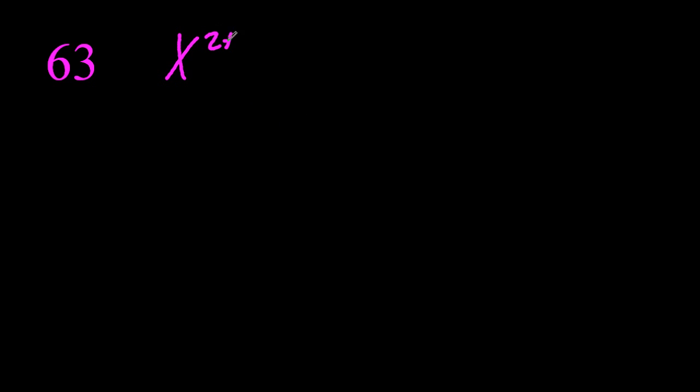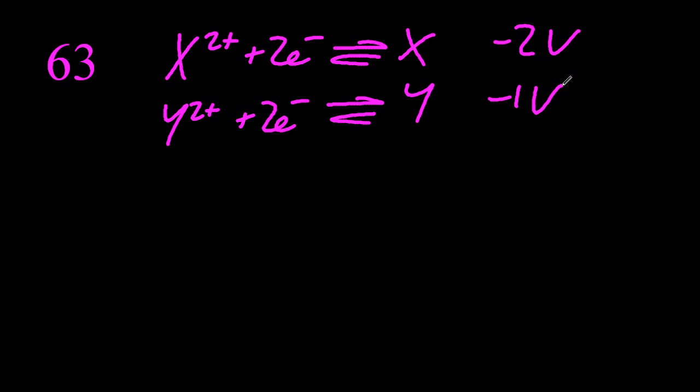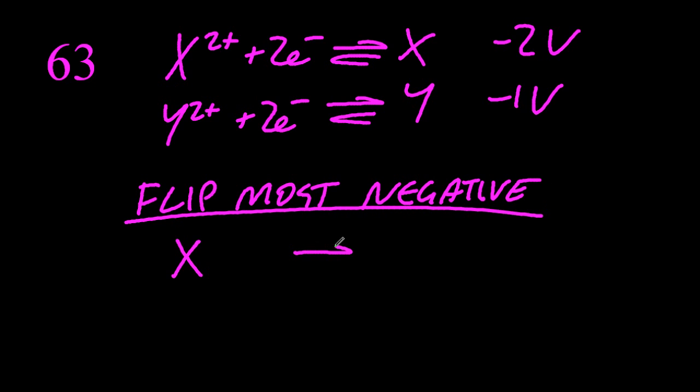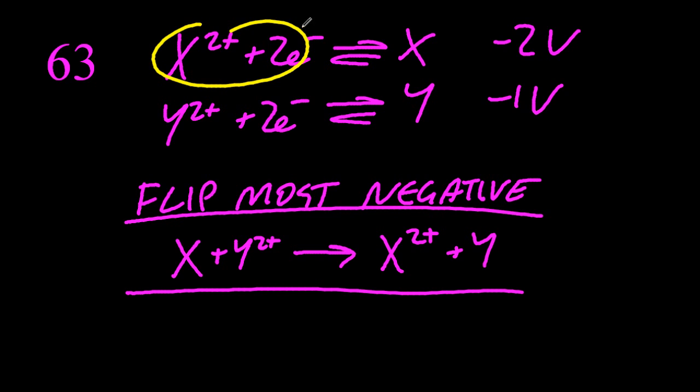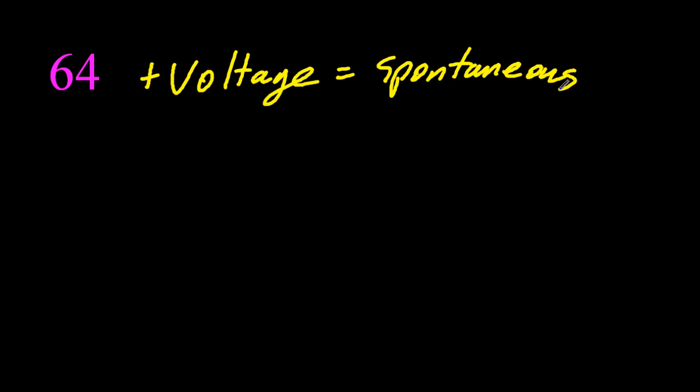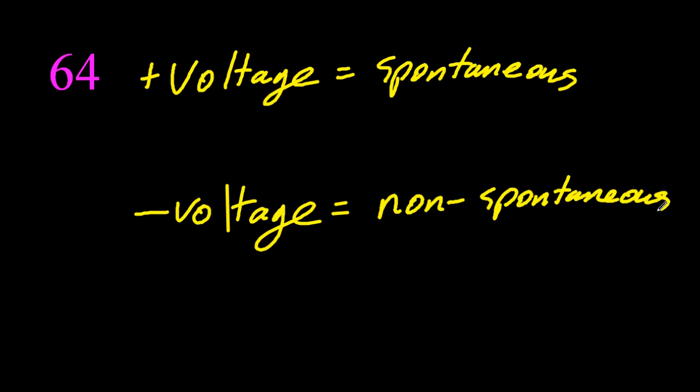63. If you had this table of electrochemical half cells, if you want to know the reaction that will happen, flip the most negative. Take the highest one on the list and flip it round and add it to the lowest one on the list. Flip the most negative. Then it's spontaneous. Spontaneous reactions have positive voltages. And if you flip the most positive, you're going to get a non-spontaneous reaction and that will be a negative voltage.